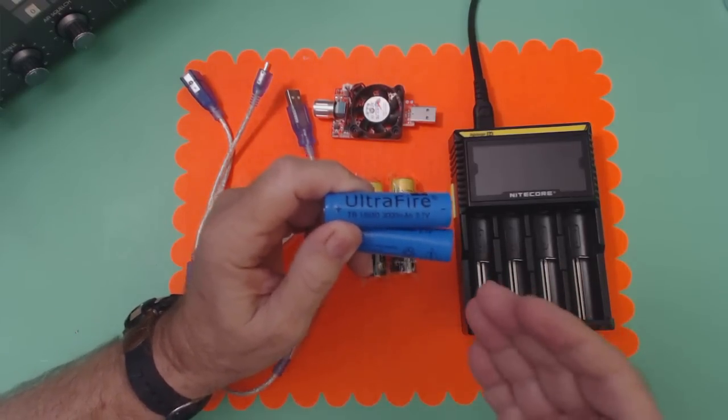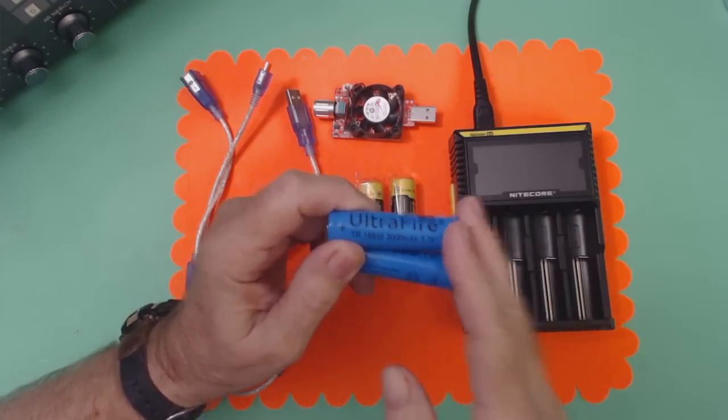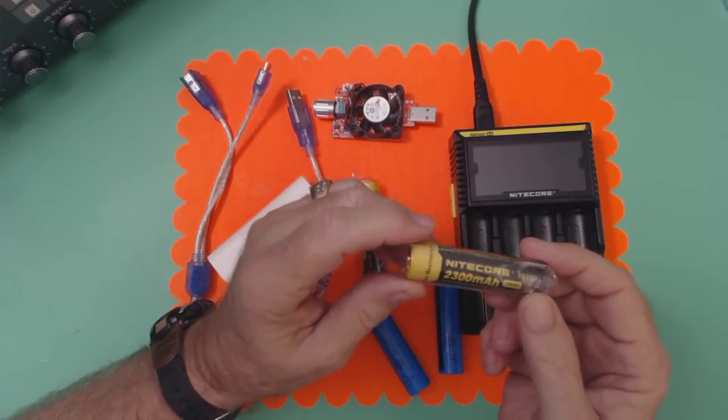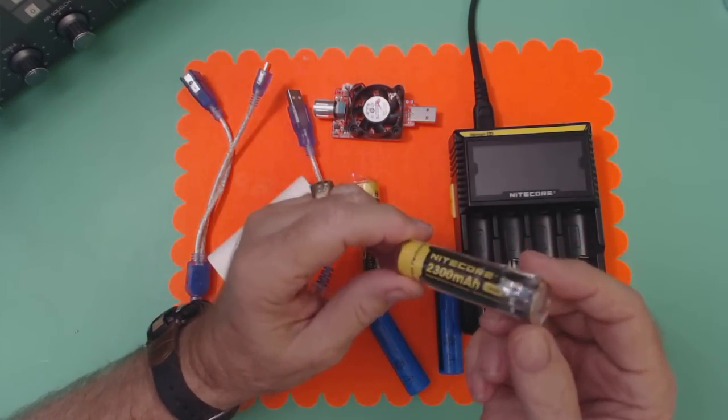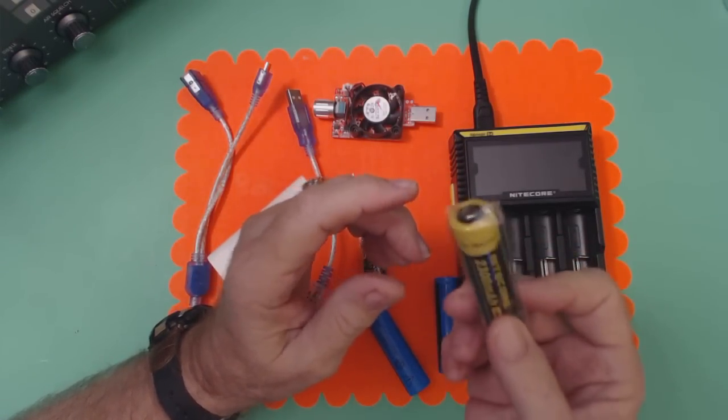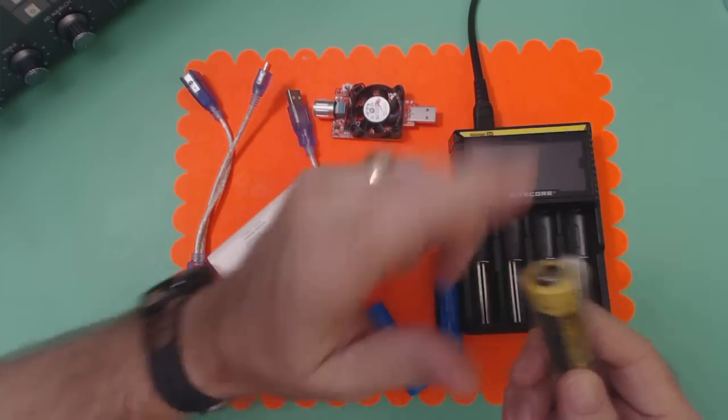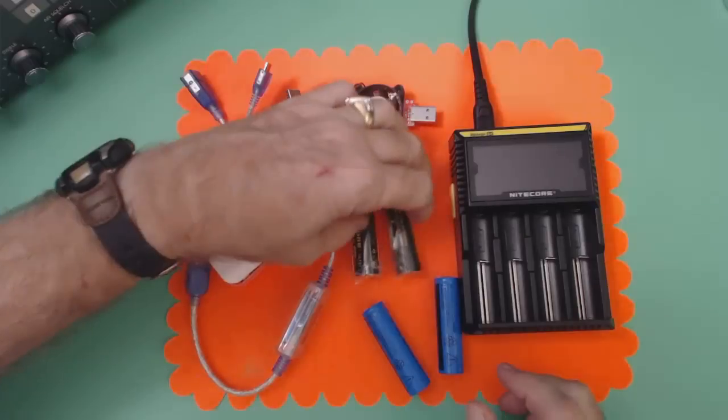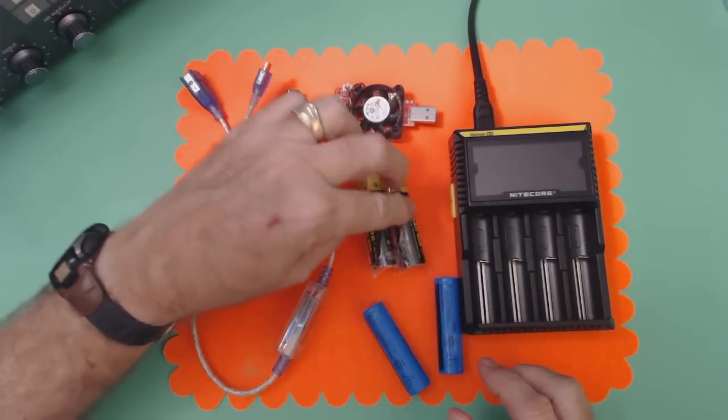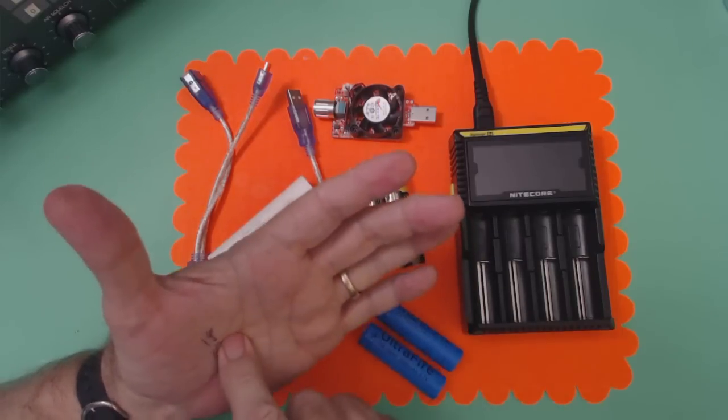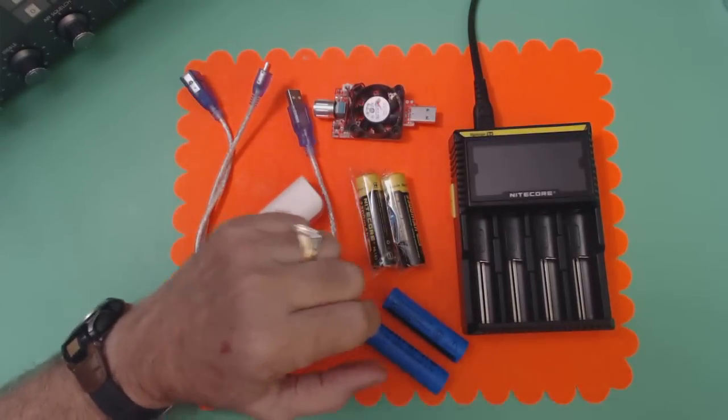Today we're going to test these batteries against the ones that Nitecore sent me. These are the Nitecore 2300 batteries. Two of these batteries sell for, let me look at my hand, eighteen dollars for two of them. So these are eighteen dollars for two and these are two for ten dollars and you can get a charger.